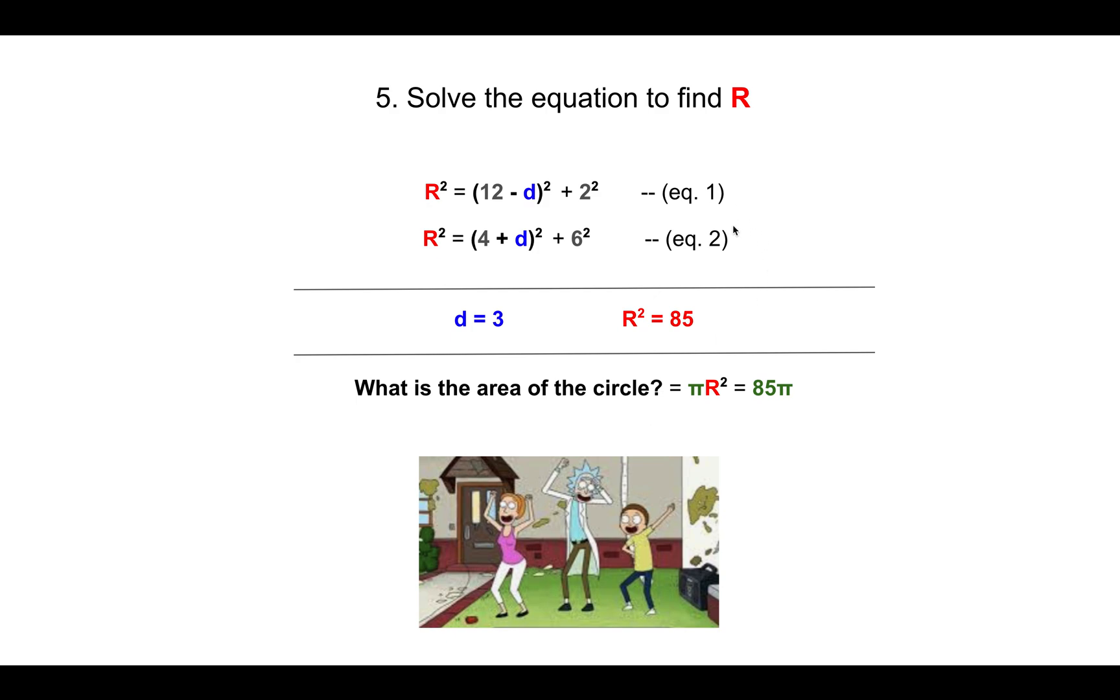We simply need to solve the two equations to find what is d and then what is r. If you solve it, which I'm sure you can, you'll figure out that d equals 3 and r² equals 85, which means that the area of the circle is πr², that is 85π.